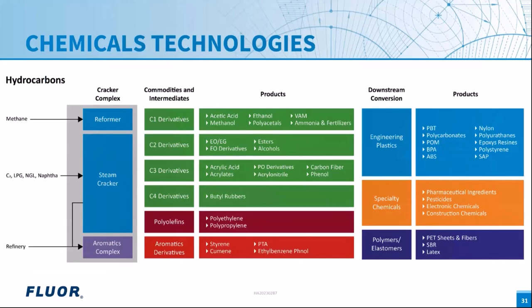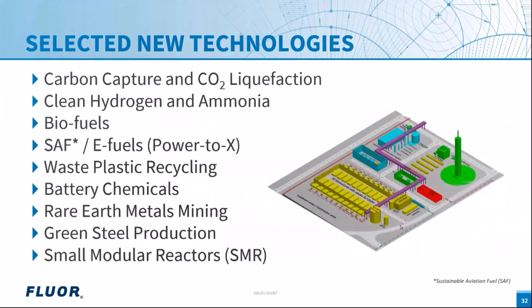Thank you, Martijn. Before discussing new technology estimating, let's look at examples of new technology projects currently seen in the market: carbon capture, CO2 liquefaction, hydrogen, ammonia, biofuels, sustainable aviation fuels, waste plastic recycling, battery production for electric vehicles, rare earth metals, green steel production, and small modular reactors. These represent the types of projects where traditional estimating approaches may need to be adapted.